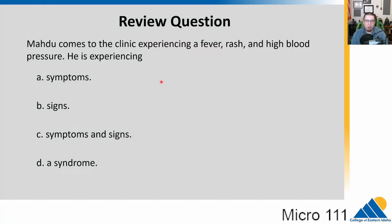Before we get into chapter 2.3, let's do some review. We have Madu who comes into a clinic experiencing a fever, rash, and high blood pressure. Is he experiencing: A) symptoms, B) signs, C) signs and symptoms, or D) a syndrome? Go ahead and pause the video and think about that one.